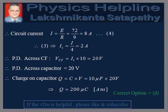Therefore, the charge on the capacitor can be obtained using the relation Q = C into V. Putting the values and simplifying, we get Q equal to 200 μC, which is the answer. Therefore, the correct option is D. This completes the answer to the question.